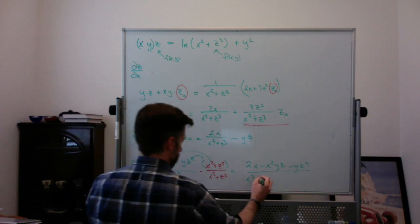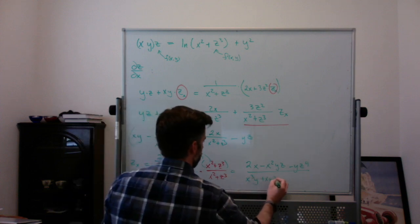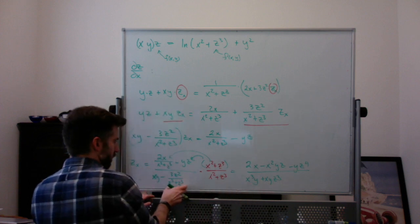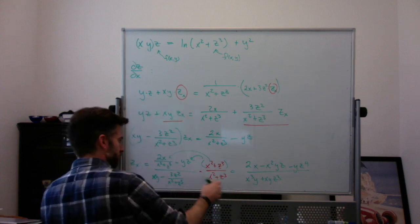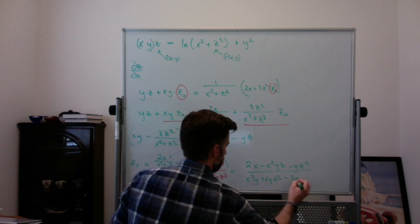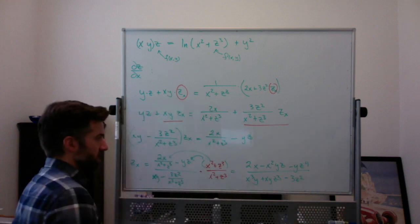xy times z³ is xyz³. And all of this times x² + z³. The denominator cancels out and you get minus 3z². So that would be your ∂z/∂x.